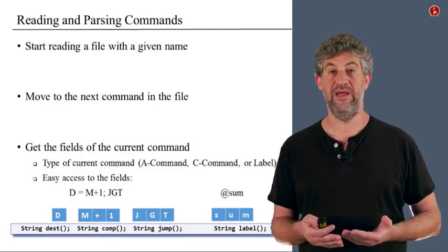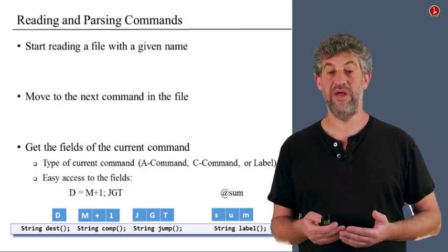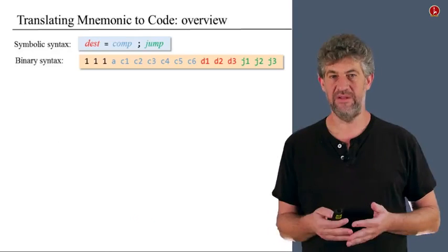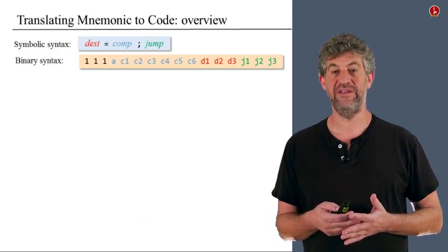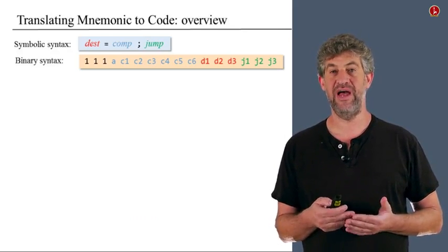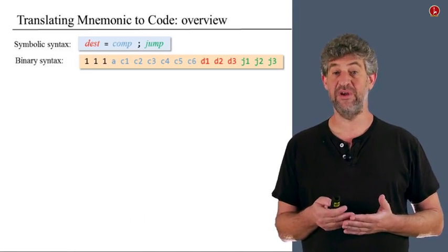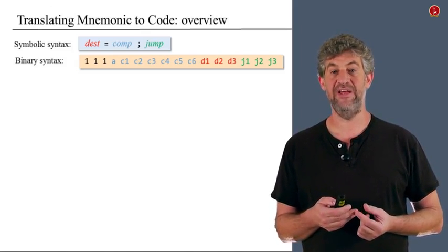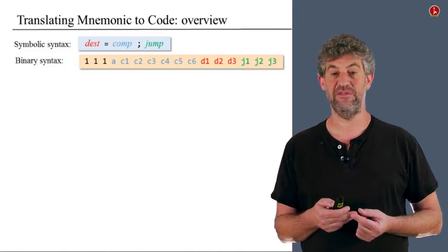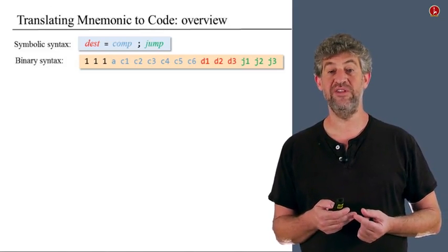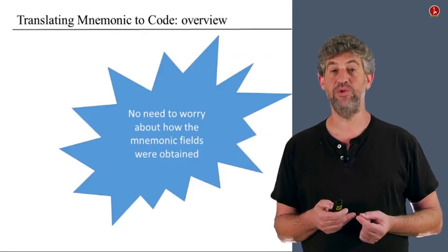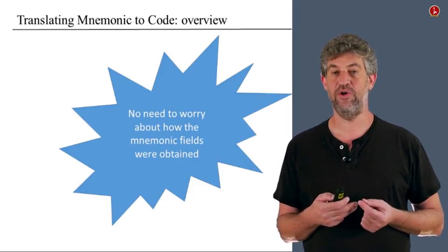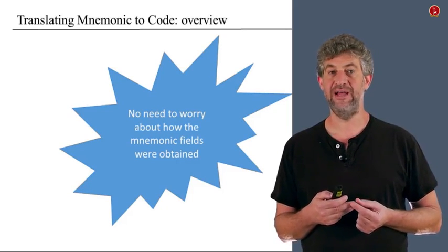The next thing we have to do is translate each component of the command into actual machine code — binary code. Recall that in the specification of the language, each part of the assembly language command has a separate part inside the bits of the machine language command that corresponds to it. The important point here is what we don't need to worry about: we don't need to worry about how our mnemonics were obtained. We only receive a destination, for example D, or a computation, for example M plus 1, and need to translate that short string into the code.